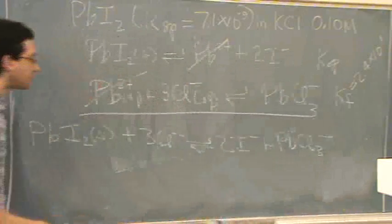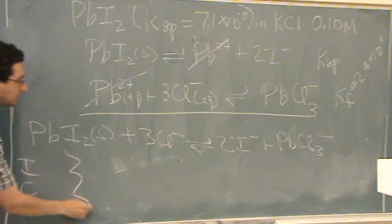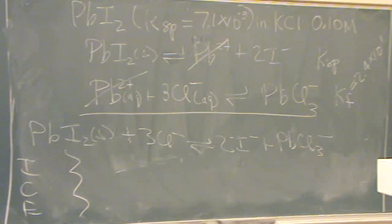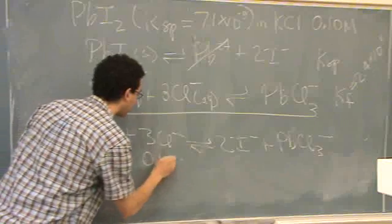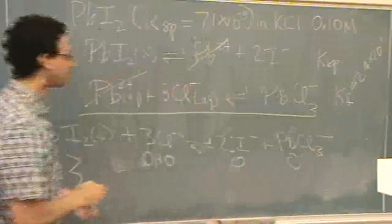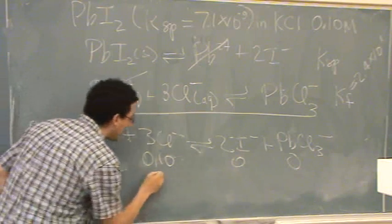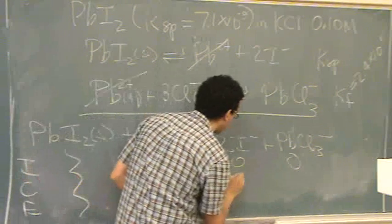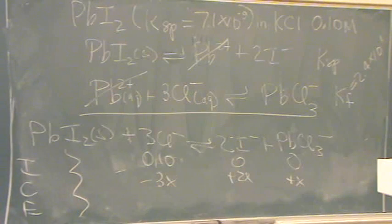You're left with lead iodide solid plus 3Cl minus goes to 2I minus plus PbCl3 minus, everything not labeled is aqueous. For molar solubility write down the ICE table, ignore solids, everything else is aqueous. The only one that has a value is the Cl minus, it's 0.10, 0 and 0, so then you'd go minus 3X plus 2X plus X and so on.